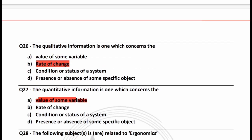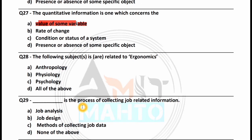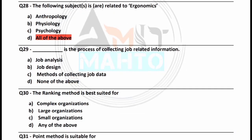To summarize: qualitative information relates to rate of change, quantitative information relates to value of some variable. The following subjects are related to ergonomics: anthropology, psychology, physiology — all of the above, option D. The process of collecting job-related information is called job analysis — option A is the right answer.